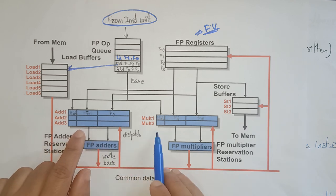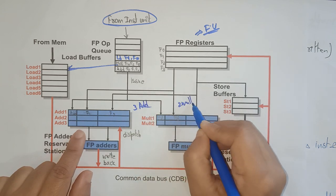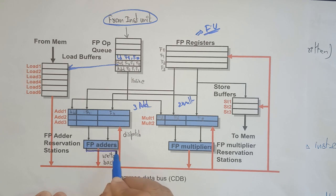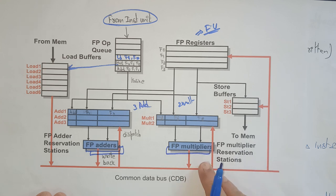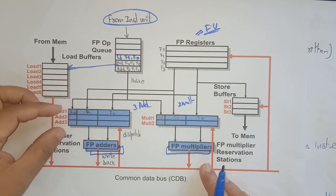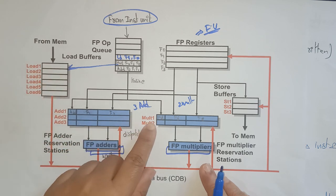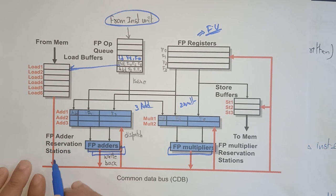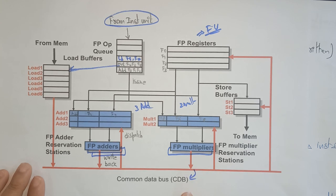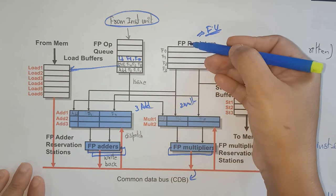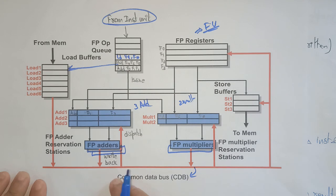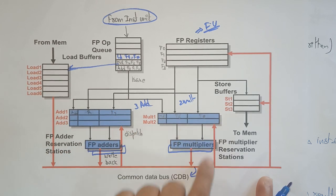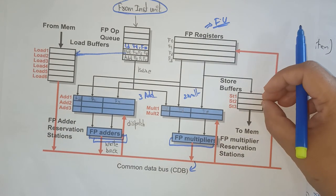There are three adders and two multipliers — floating point adders and floating point multipliers. There are also reservation stations: adder one, adder two, adder three, multiply one, and multiply two. The red lines represent the common data bus, while the normal lines are the standard bus. Data on the common data bus can be accessed by any adder, multiplier, store, or load unit.